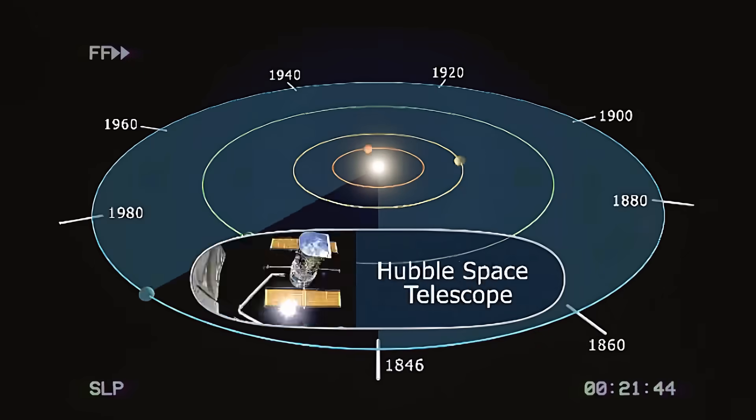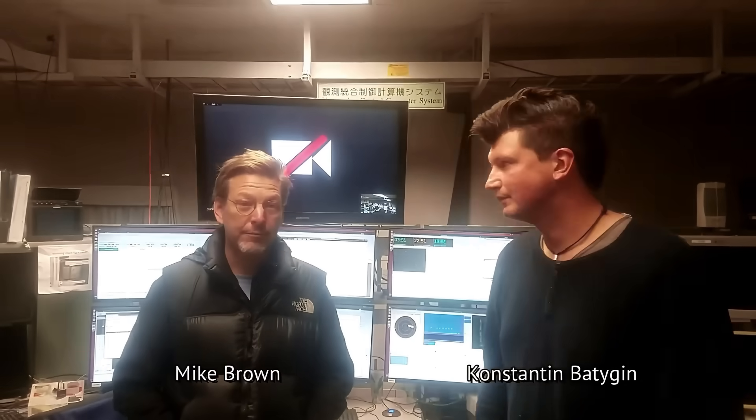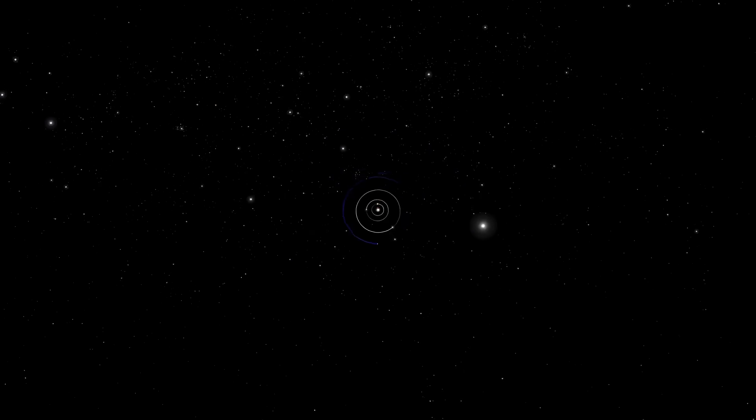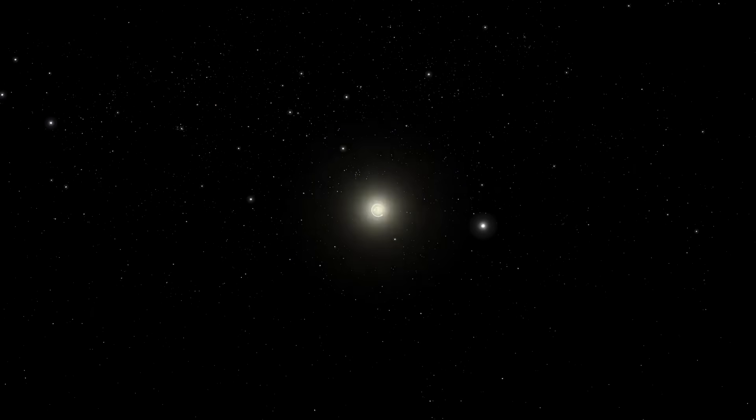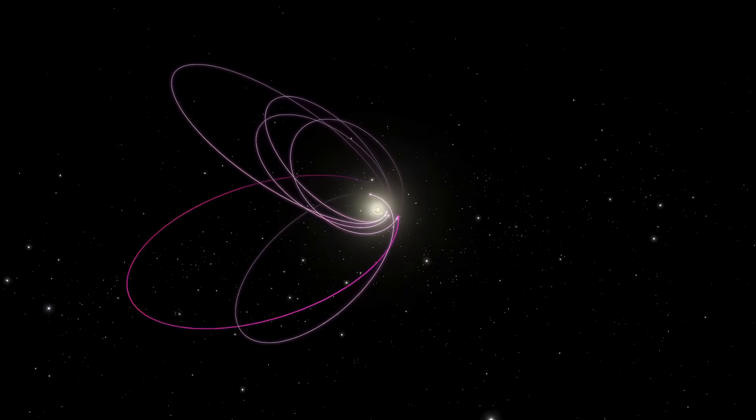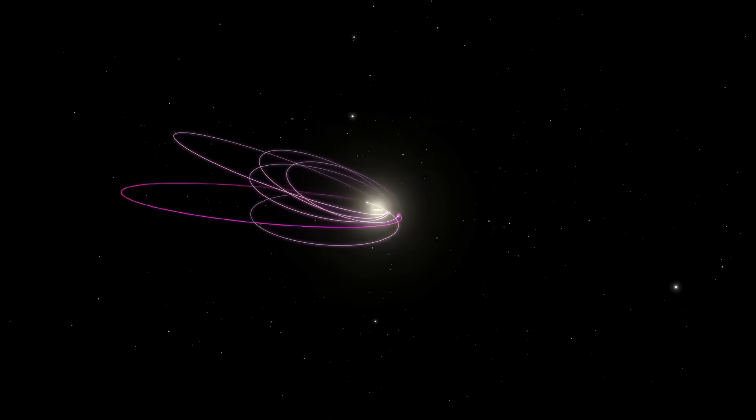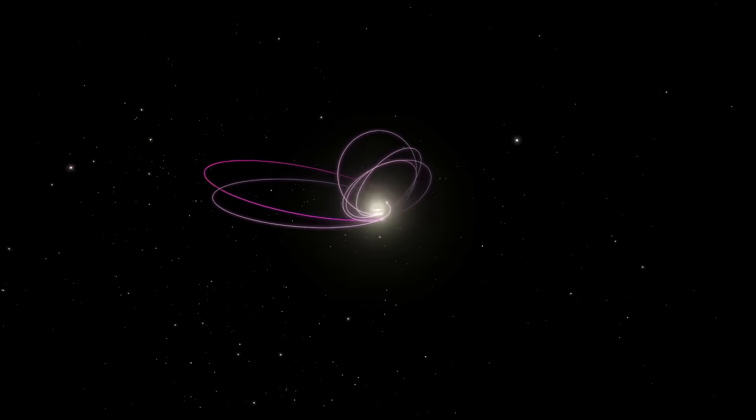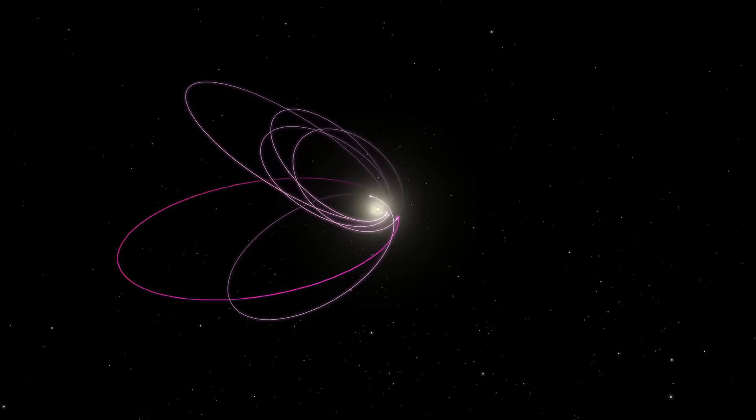Now, let's fast forward to 2016. Two scientists, Mike Brown and Konstantin Badigin from Caltech, noticed something strange. They were looking at the orbits of a few distant objects in the Kuiper Belt when they noticed a pattern. These orbits weren't random. They were clustered, tilted in the same direction, as if something massive was tugging on them.